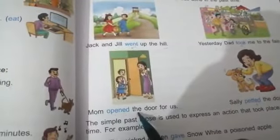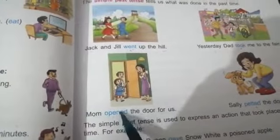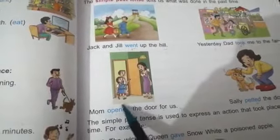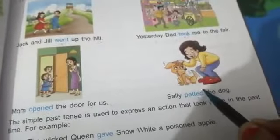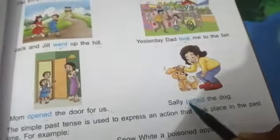Mom opened the door for us. Here, opened is the past form of open. Shelly petted the dog. Here, petted is the past form of pet.